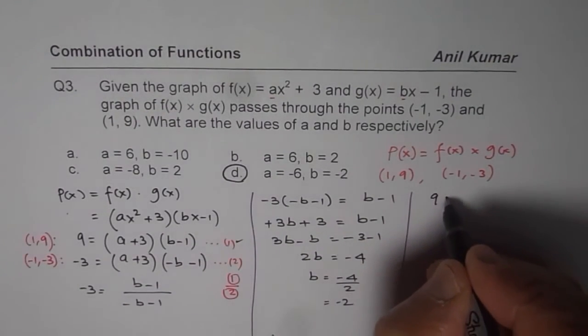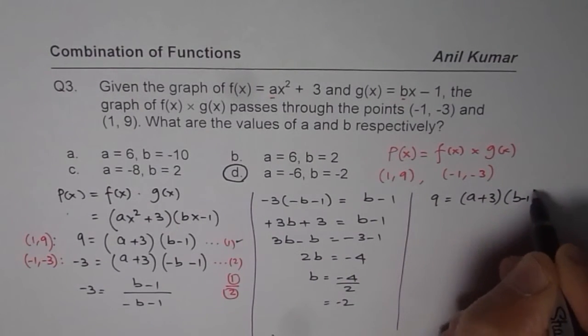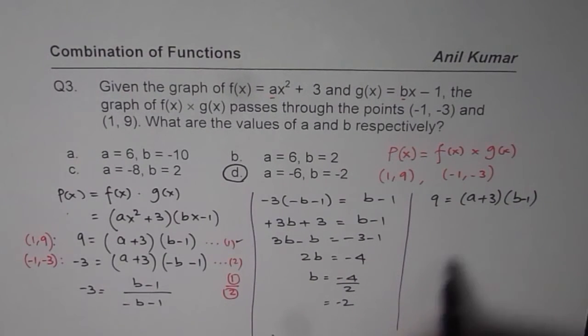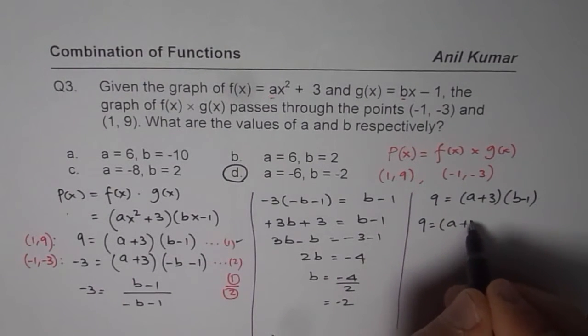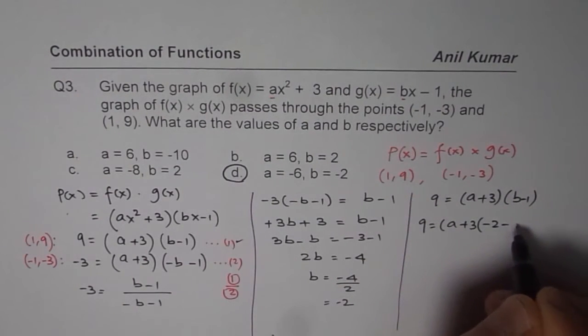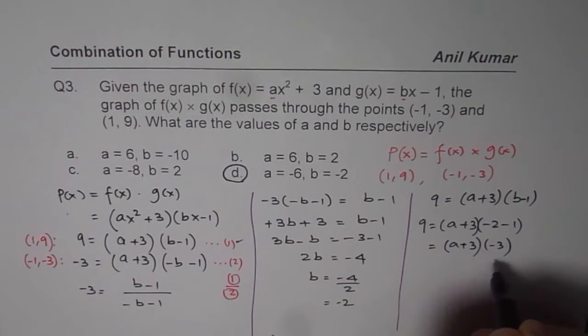which is 9 equals a plus 3 times b minus 1. Substituting b equals minus 2 here, we get 9 equals a plus 3 minus 2 minus 1. So, which is a plus 3 minus 3 equals 9.